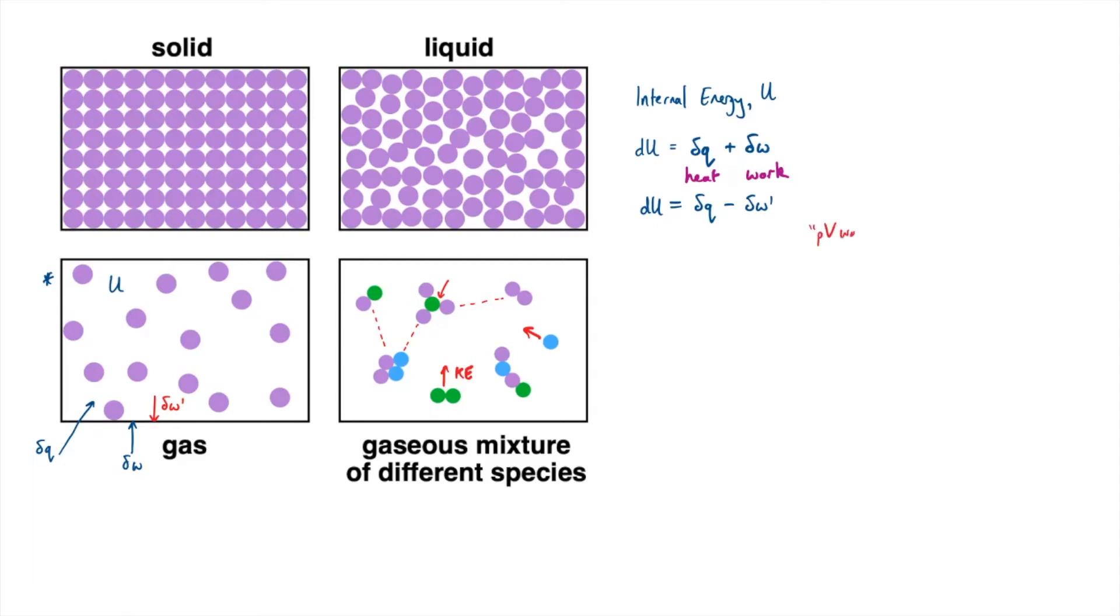Our work done by our system is just simply the pressure times the change in volume. The pressure times a change in volume is directly equivalent to a force being moved by a certain distance. With our heat components, there are some general results from thermodynamics that tell us that if we consider this under reversible conditions, we know that the change in entropy is equal to the change in heat under reversible conditions divided by temperature. Now subbing all these in together, I can rearrange to give me dU equals TdS take away PdV.